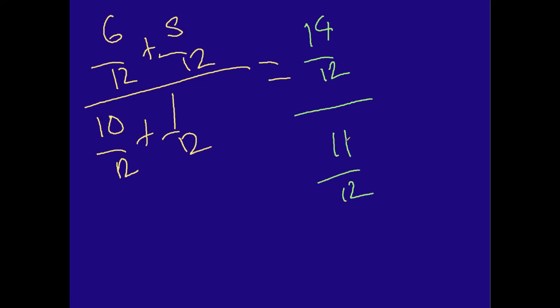Now, let me move and give myself a little bit more space here. So I have 14 over 12 over 11 over 12. So I just convert this to regular division, if you will. And it becomes 14 over 12 divided by 11 over 12.